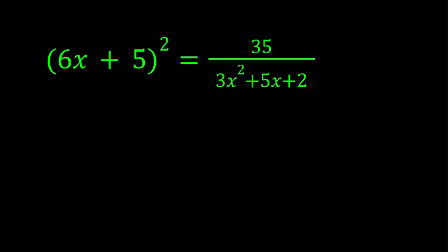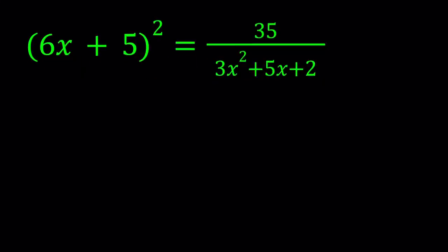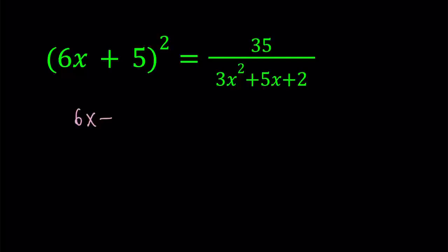And to be able to solve this problem we're going to turn this into a polynomial. So you're going to see the original version as well. So let's go ahead and cross multiply. That gives us 6x plus 5 quantity squared multiply by 3x squared plus 5x plus 2 equals 35.